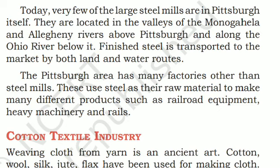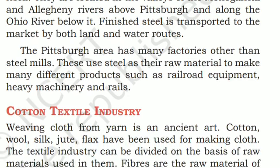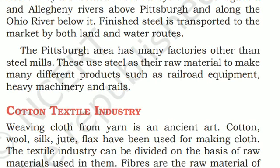Today, very few of the large steel mills are in Pittsburgh itself. They are located in the valleys of the Monongahela and Allegheny rivers above Pittsburgh and along the Ohio river below it. The Pittsburgh area has many factories other than steel mills, which use steel as their raw material to make products such as railroad equipment, heavy machinery, and rails.